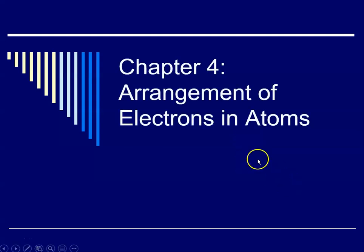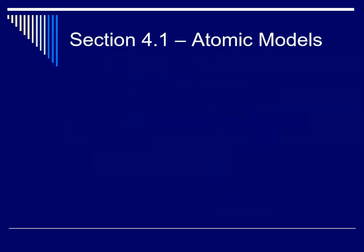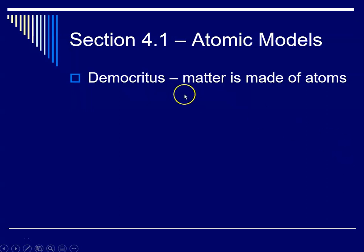Hello class, this is Miss Augustine and today we are going to begin chapter 4 which is about the arrangement of electrons in atoms. So we're going to begin with a review of atomic models and you'll recall that Democritus was the first one to mention that matter is made of atoms.